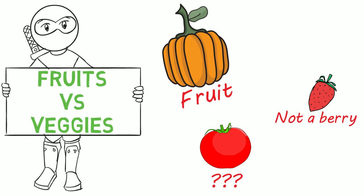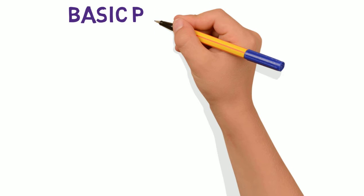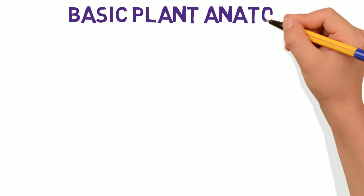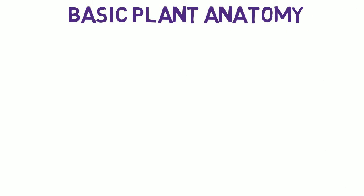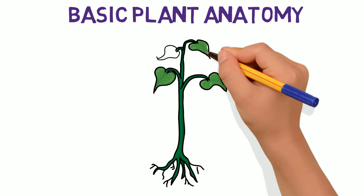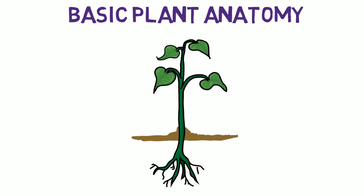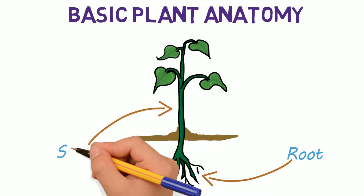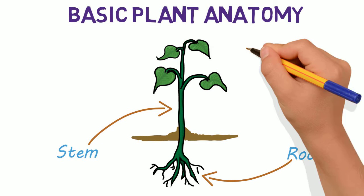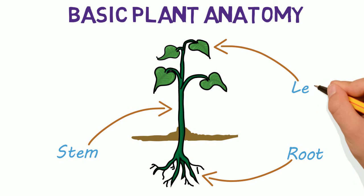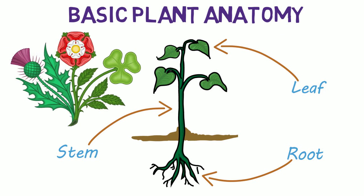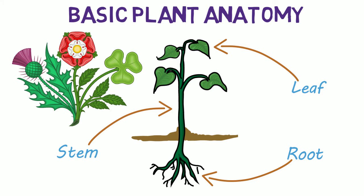To understand how fruits and veggies are classified, we need to cover some very basic plant anatomy. Nearly all plants consist of a root, a stem, and some type of leaf. And some plants also produce flowers. Got it?